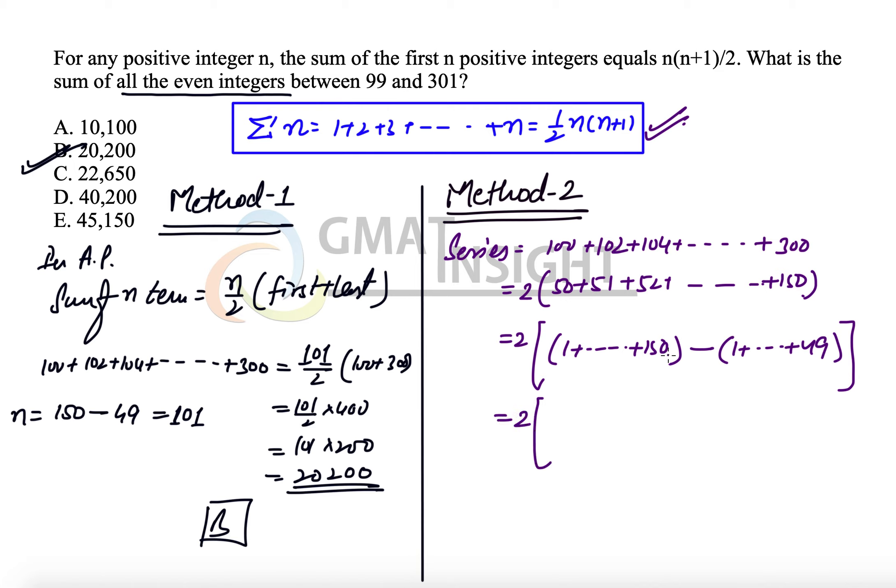We can use this property. Sum of 1 to 150 is 1/2 times 150 times 151 minus sum of 1 to 49, which is 1/2, 49 times 50. We can take 1/2 out. So 2 times 1/2 in the bracket, we have 150 into 151 minus 49 into 50.